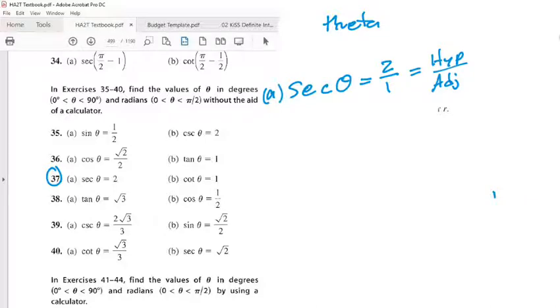So now it's hypotenuse over adjacent. Is there a way to find the other side?